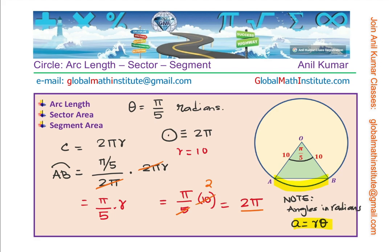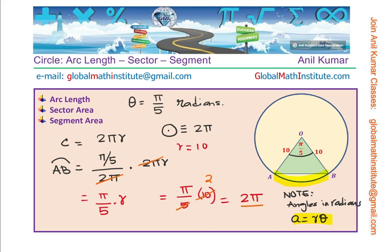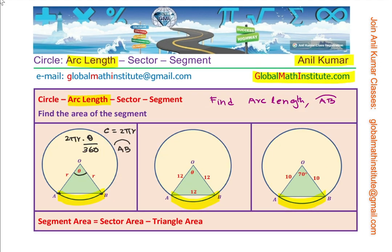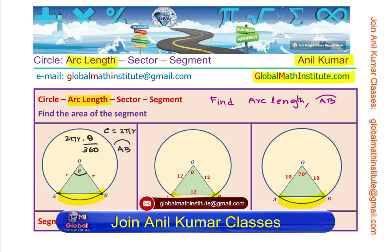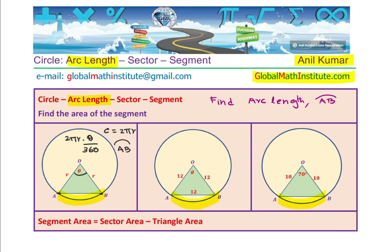So in this particular case you understood how to find arc length and we also discovered that if the angle is given in radians, then arc length is r theta. I hope with this the concept of finding arc length is absolutely clear.